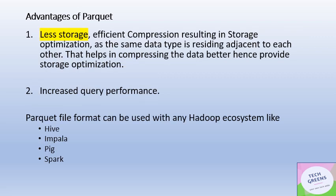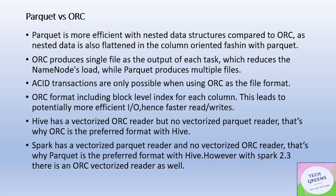Now let's look at the advantages of Parquet. As a columnar-oriented format like ORC, Parquet also consumes less storage. The reason is that data of the same type within the same column resides adjacent to each other, which increases the compression ratio. This effective compression combined with column-oriented storage results in faster query performance and data retrieval. Both formats work across the Hadoop ecosystem including Hive, Impala, Pig, and Spark.